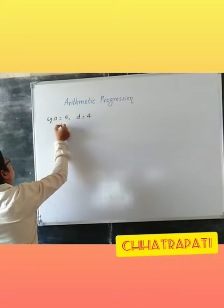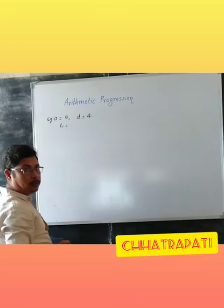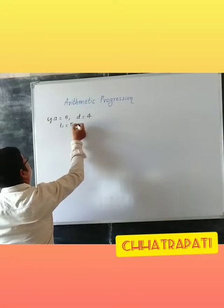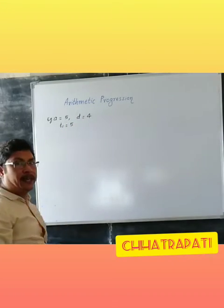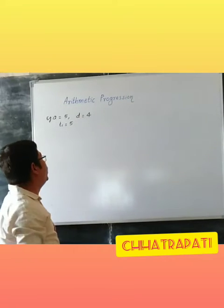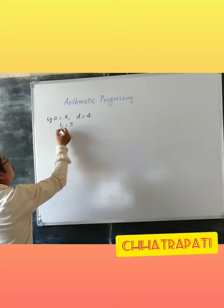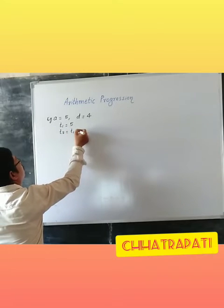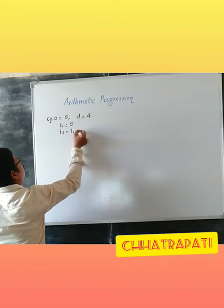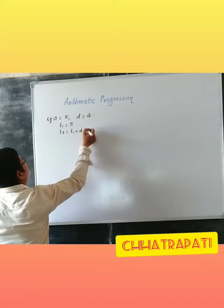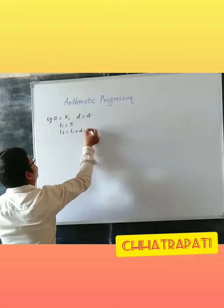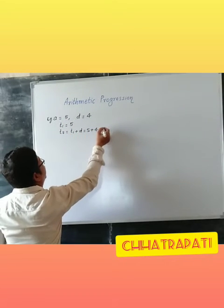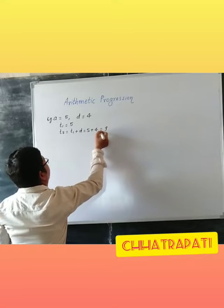The first term T1 is equal to 5. We require here the second term, that is T2. T2 is equal to T1 plus common difference. T1 is 5 and common difference is 4, so we get here second term 9.